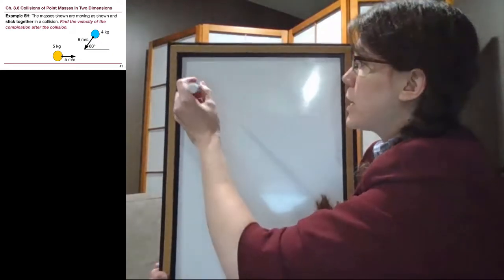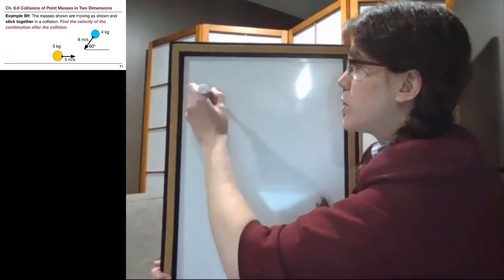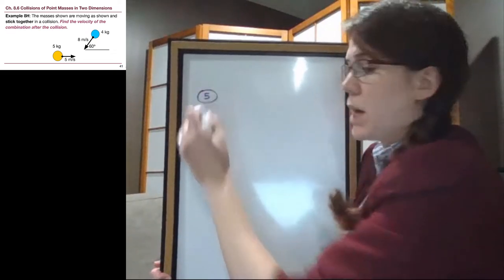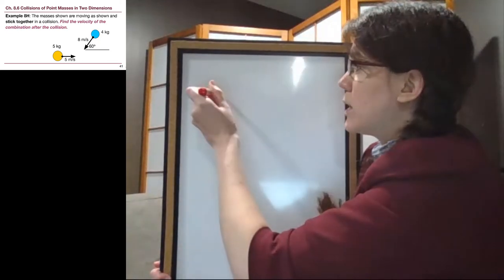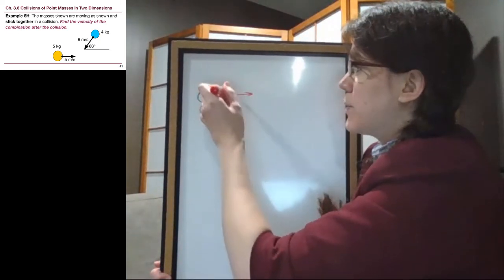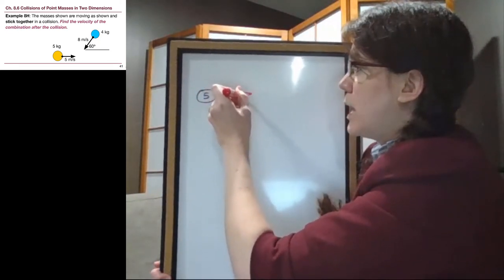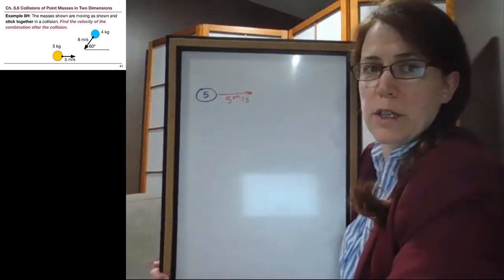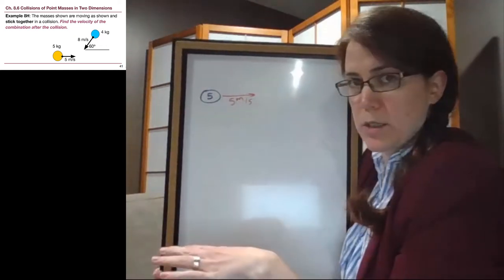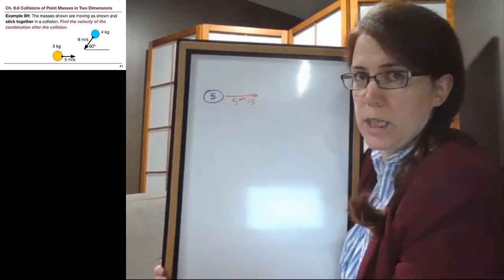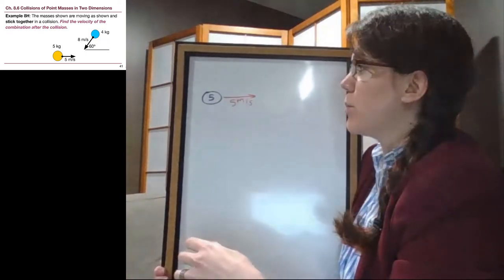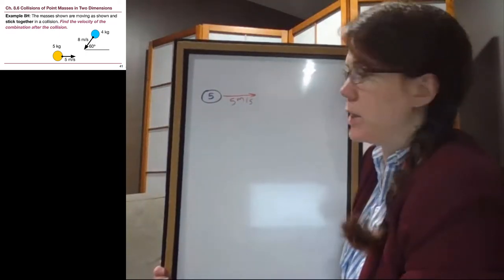So let's draw a picture of what's going on. First of all, we have the 5-kilogram block, or puck, and it is moving 5 meters per second to the side. And just so it's clear here, we're looking top-down at a table. These are basically hockey pucks that hit each other or billiard balls that hit each other. So they're not falling. We're looking top-down at this situation.